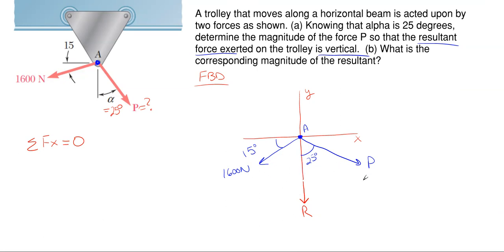So looking at the 1600 and the P, they each have components in the x and y direction. So for our 1600, since it's going down and to the left, it will have its x component to the left, and then its y component will be going downward. Since P is down and to the right, its component in the x direction will be going to the right, and its y component will be going downward. Well, the resultant is 100% downward in the y, there is nothing of it in the x. So this portion of the 1600 in the x, and this portion of the P in the x direction have to cancel with each other to be zero.